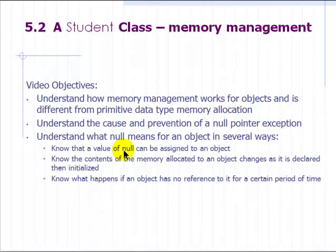And then understand what null means for an object in several ways. You can assign null to an object, just like you can fill a value of a primitive data type. We will look at the contents of the memory allocated to an object and before you initialize it to anything,